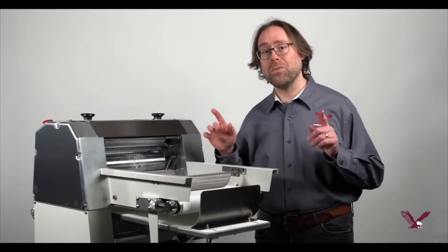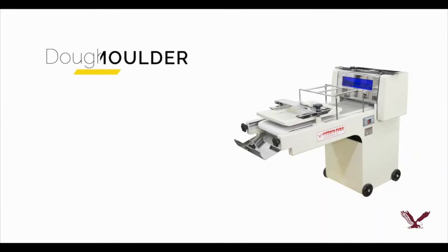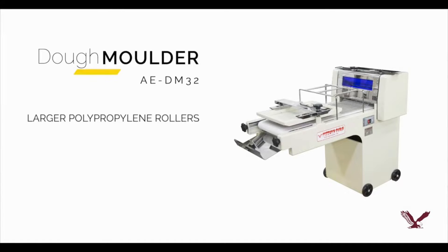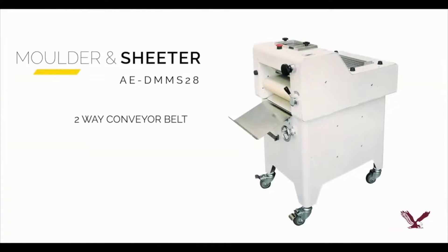The other two models available are the AEDM 32 rapid dough molder that features larger polypropylene rollers for higher volume output. Our other model, the AEDM MS28 dual mode molder and sheeter, features a two-way conveyor belt so that it can also be used as just a sheeter.